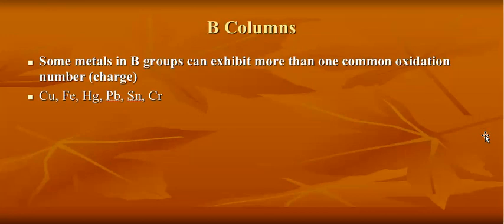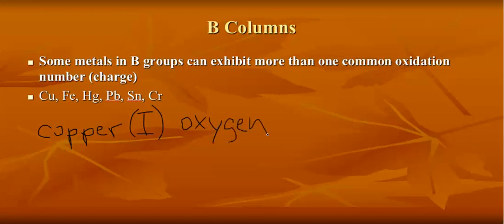Some metals in the B groups can have more than one common oxidation state or one common charge, and these are the 6 metals that can have more than one charge. You will know the charge because I will say, for example, if I want to put copper with oxygen, I will tell you what the charge on copper is because there's a copper 1 and there's a copper 2. So let's say I want to put copper 1 with oxygen, and I want to write a balanced formula. Copper 1 has a charge of plus 1.